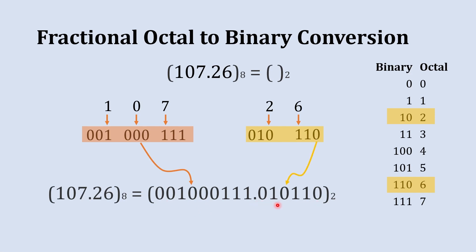You can simplify this number further by removing the leading zeros from the whole number part, giving us 1000111.010110. That's how we convert fractional octal to binary.